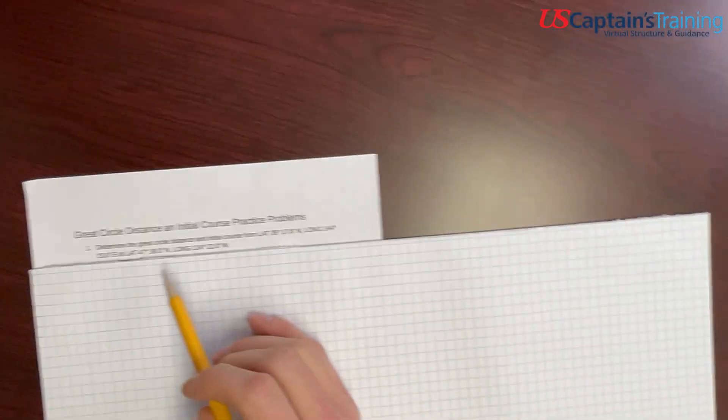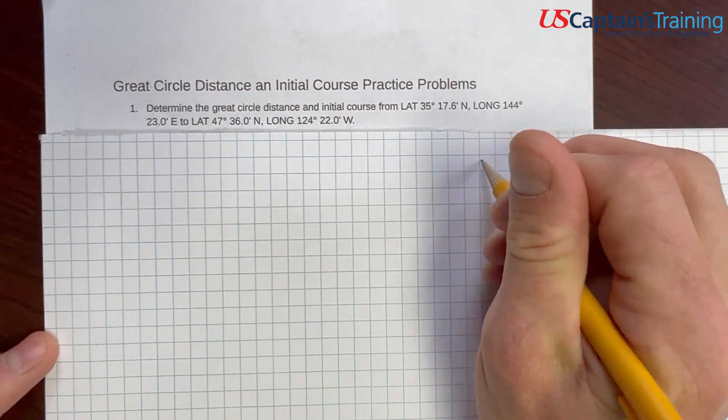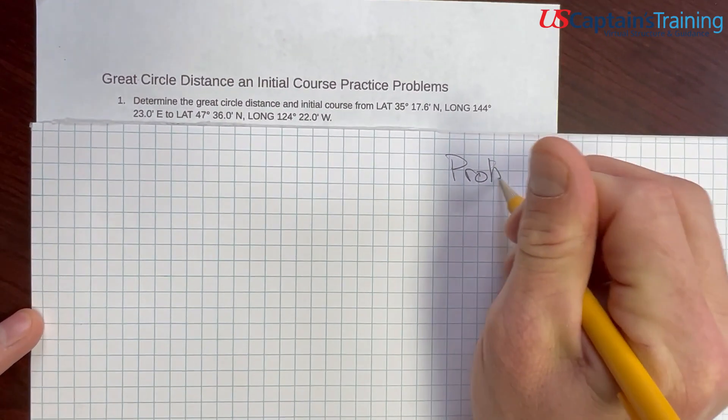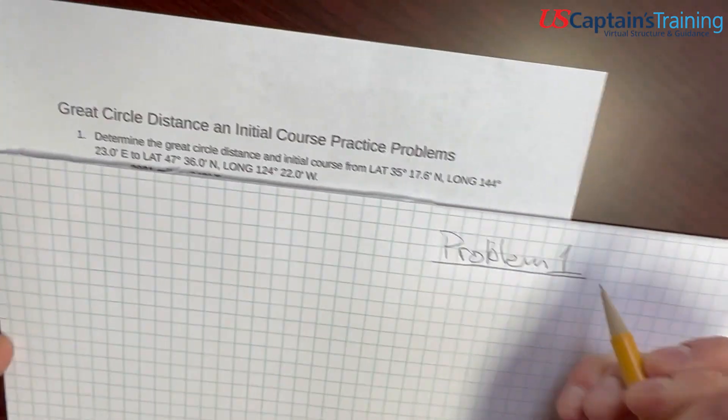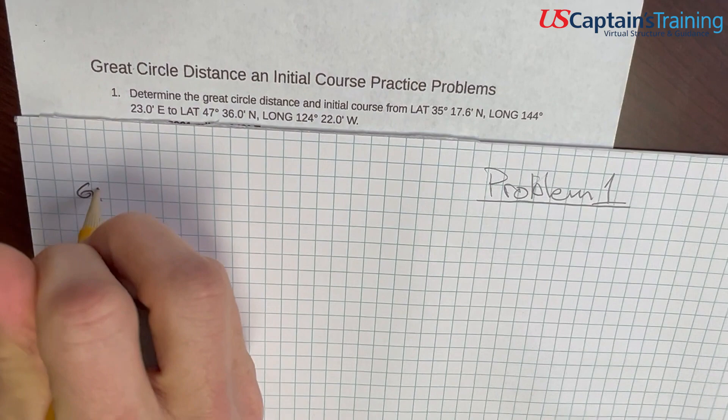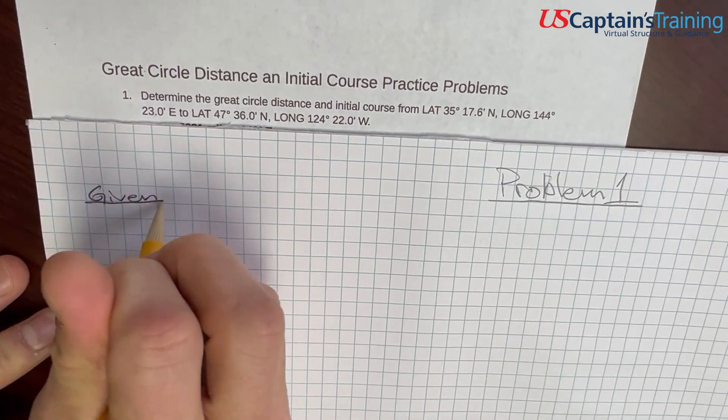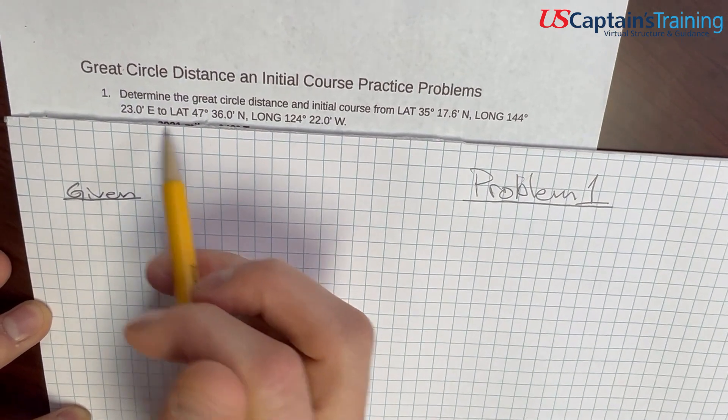Great Circle Distance and Initial Course Practice Problem 1. Let's get into this problem. First thing we're going to do is record the information given in the problem, and it's just two sets: lat 1, long 1, lat 2, long 2.